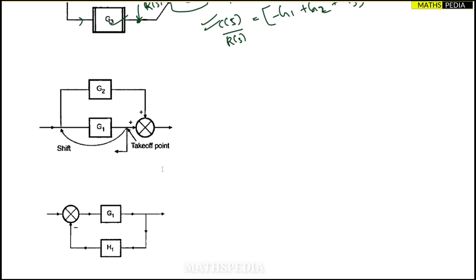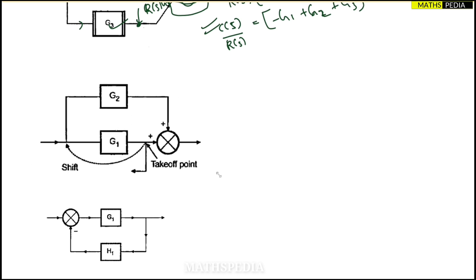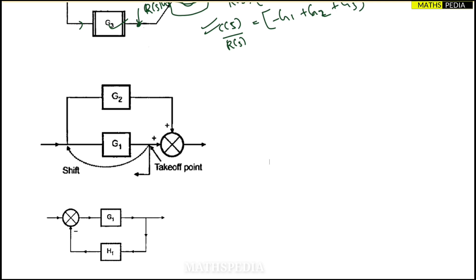But what happens now, the case has come here. Suppose this case, you observe carefully. In this case, what is happening? Carefully, R(s) is there, C(s) is output. But here one takeoff point has come between G1 and summing point. So the thing is that this block I cannot say it as parallel because in between the G1 and this summing point, one takeoff point has come.